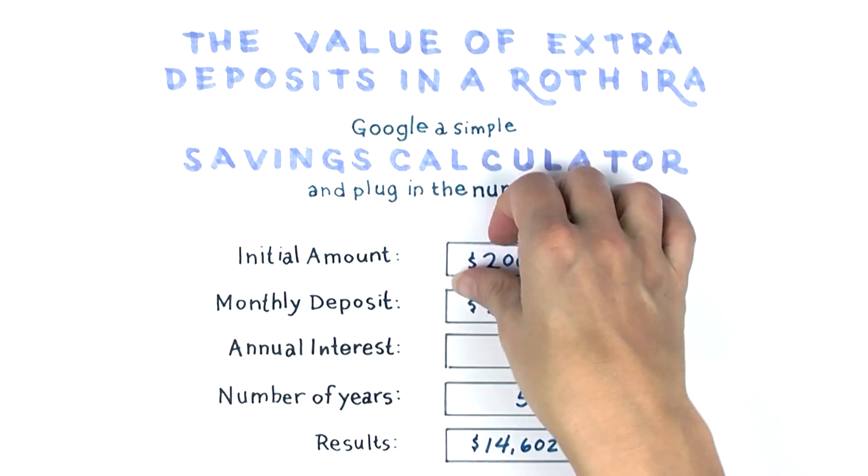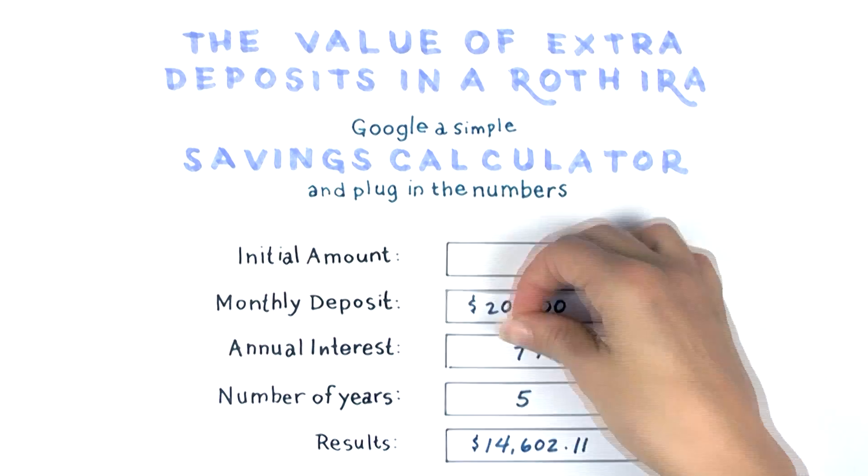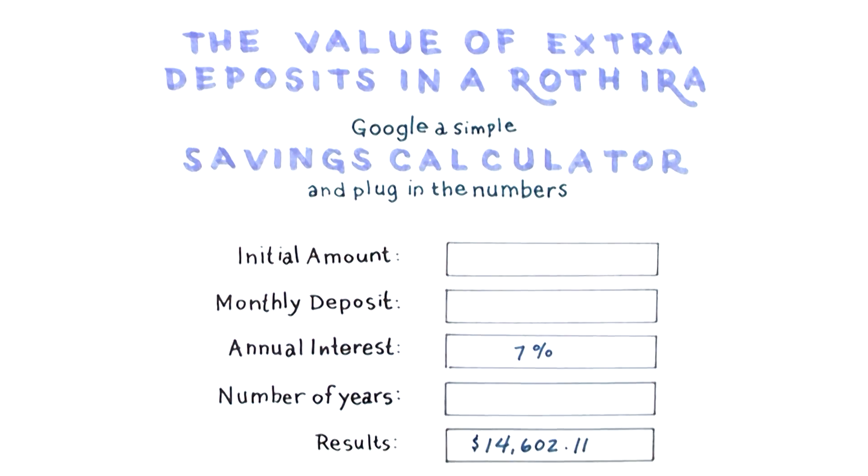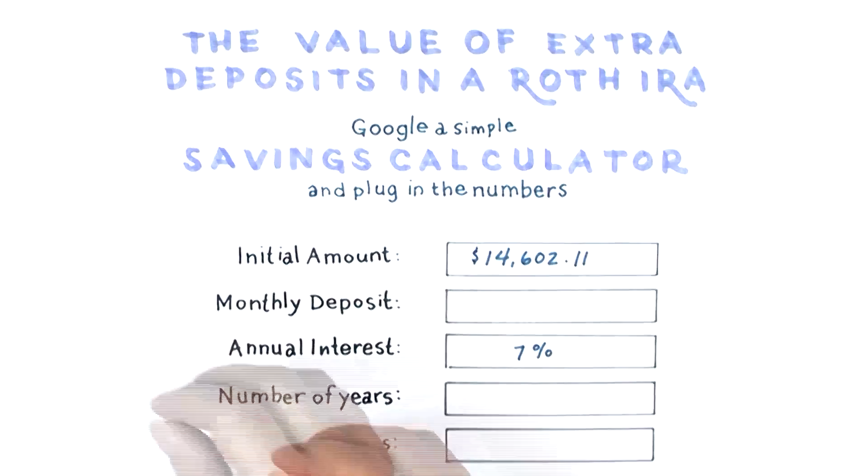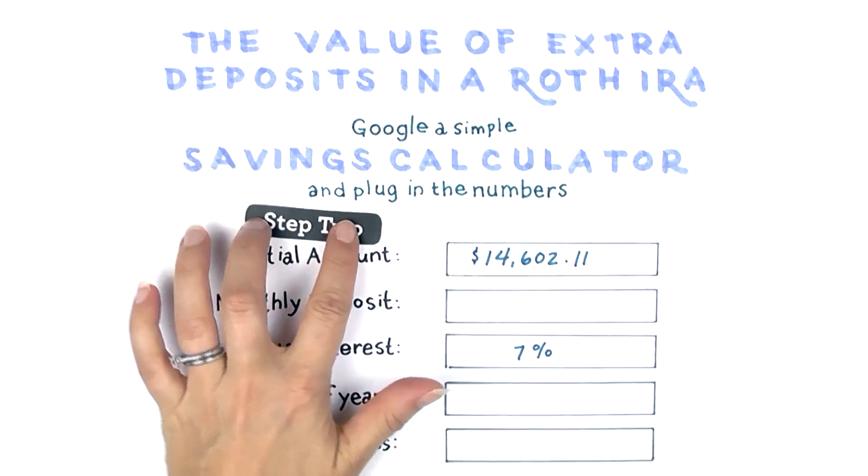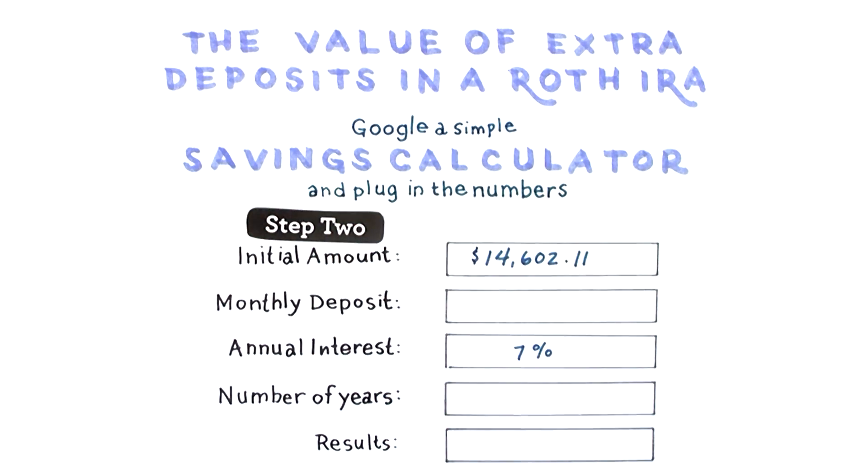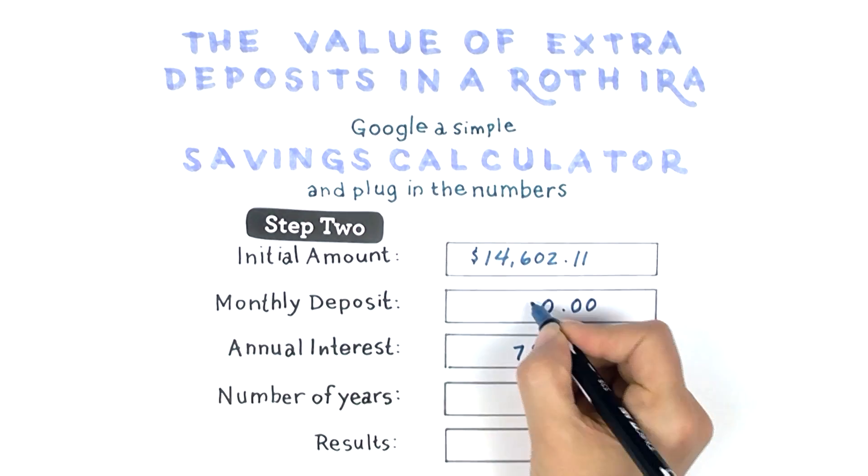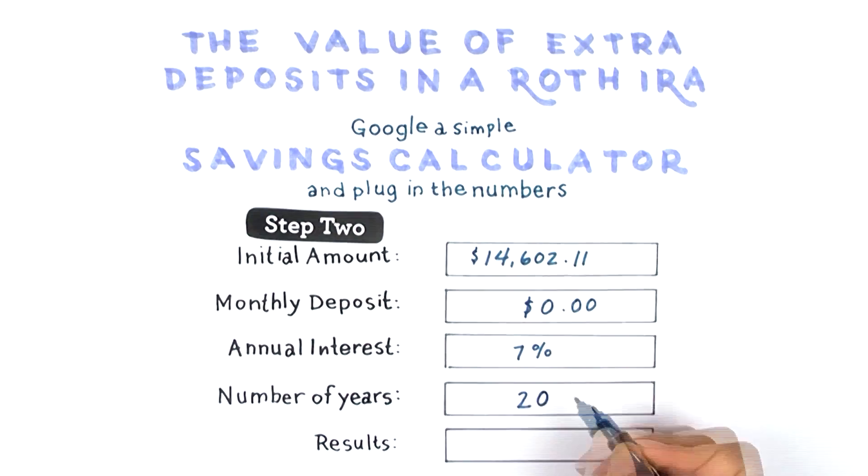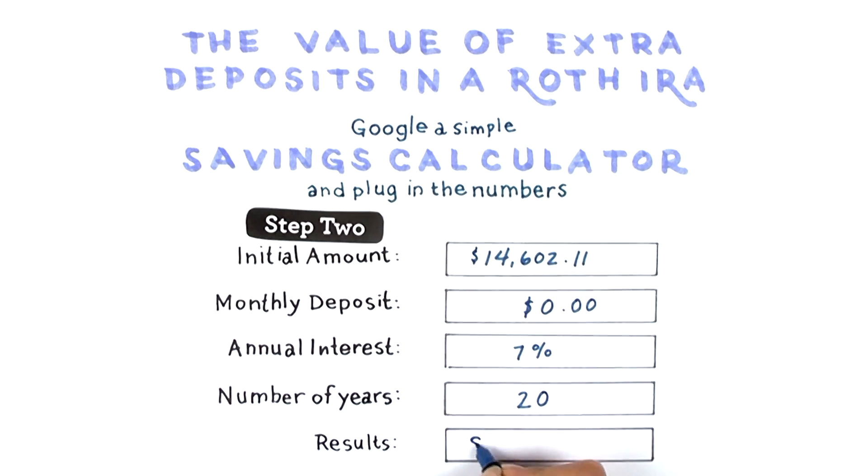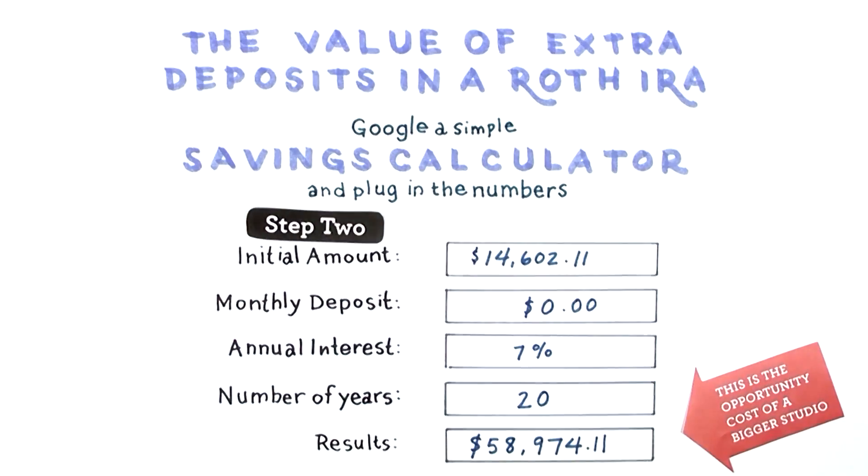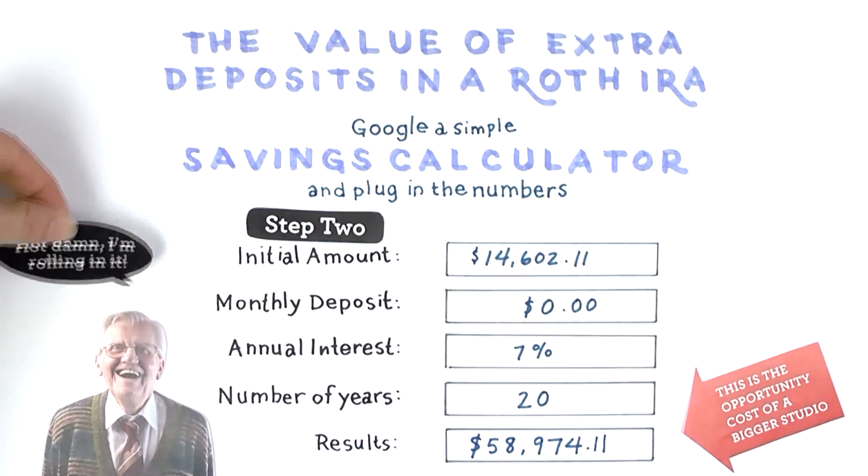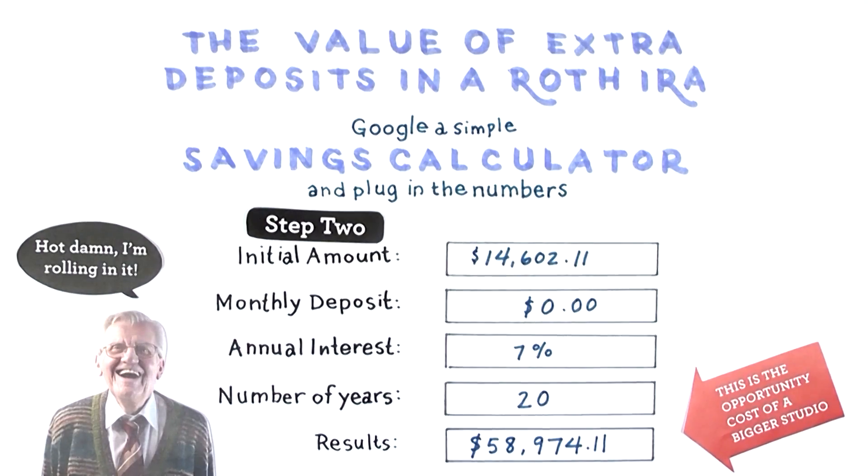After five years, you'll still have 20 years for that money to compound before you retire. So take your result from step one and use it as the initial value in step two. In this phase, there's no need to add monthly deposits. Instead, let's watch the results from step one compound for an additional 20 years, giving us $58,974.11 at the time of retirement. Now we're talking about some real money! Hot damn! I'm rolling in it!